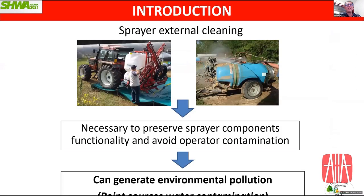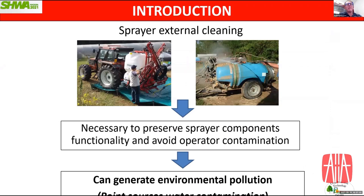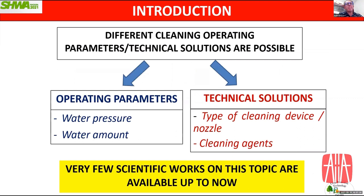External cleaning is necessary to preserve sprayer components and prevent contamination for operators and the environment. Point source pollution is typically generated during cleaning operations on the farmyard. We can use different cleaning systems and act on operating parameters such as water pressure and water amount, as well as the type of cleaning device and use of specific cleaning agents. However, very few scientific works are available to date.